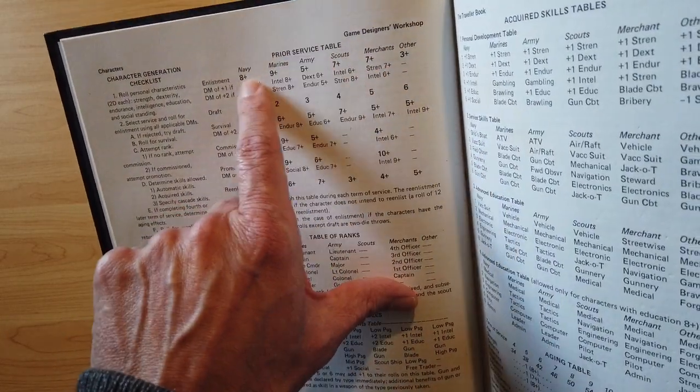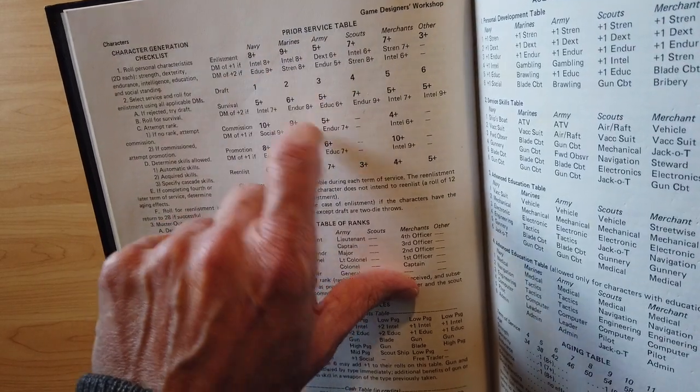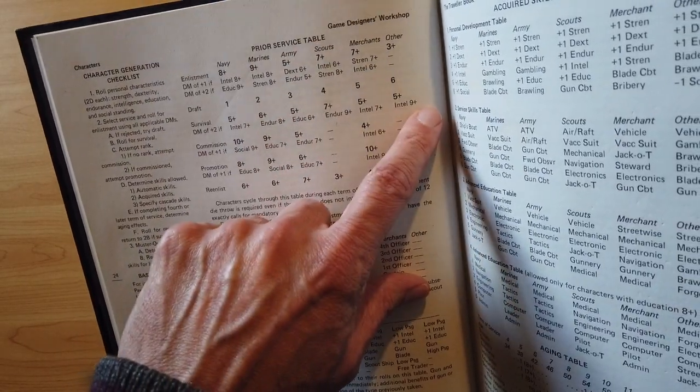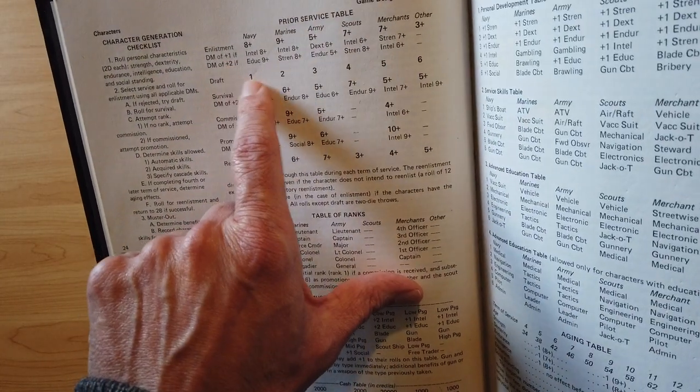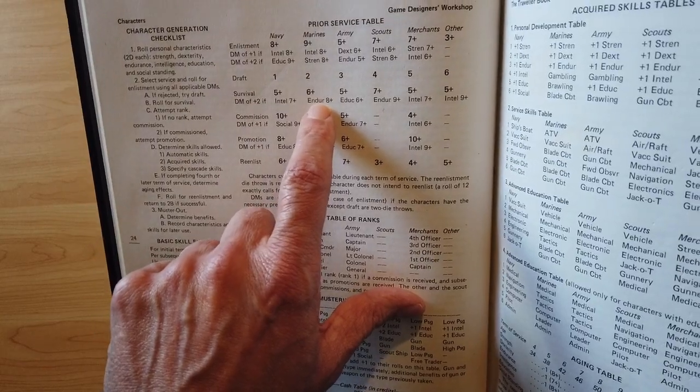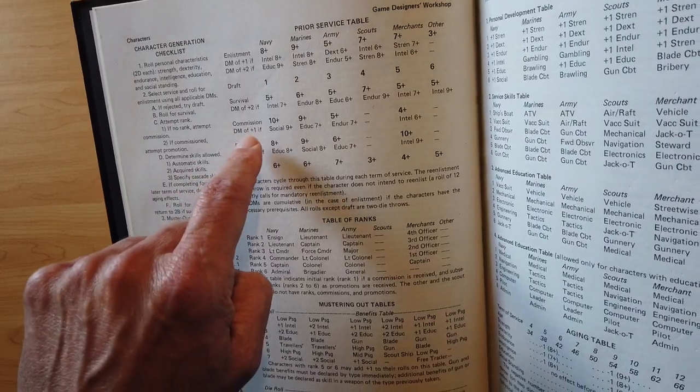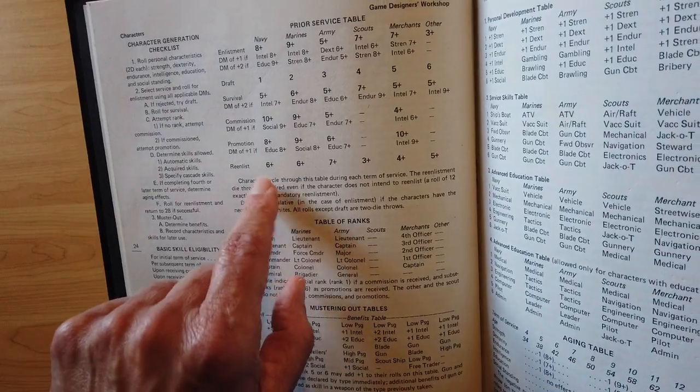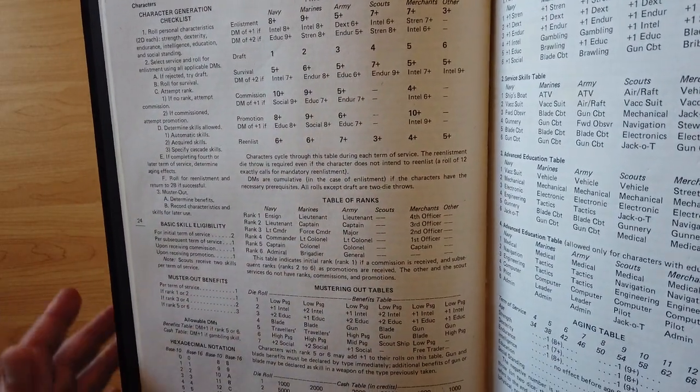So this is the number you have to roll to enlist in that service. You get a few bonuses depending on some high characteristics. And if you don't roll that, then you can go to the draft. Roll a six-sided dice, and whichever one you roll, that's the service you go into. And yes, it is possible to get drafted into the service that you couldn't enlist in. So you do have a survival role to see if you survive your first four-year term of service. You see if you get a commission, so you become an officer. And did you get a promotion? You get to do that for every four-year term. And then you have a role to re-enlist. Did it let you do another four-year term?